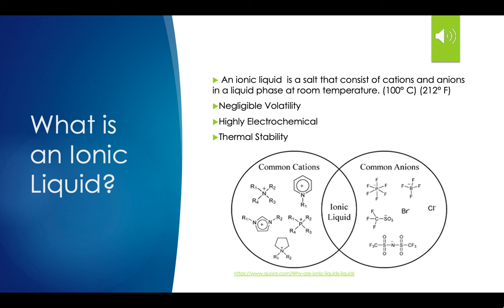What is an ionic liquid? An ionic liquid is a salt that consists of cations and anions in a liquid base at room temperature. In the diagram shown below, you can see common cations and common anions, and when they are paired together, they form an ionic liquid. This happens when the ion pair consists of a positive ion and a negative ion temporarily bonded together by an electrostatic force of attraction between them.